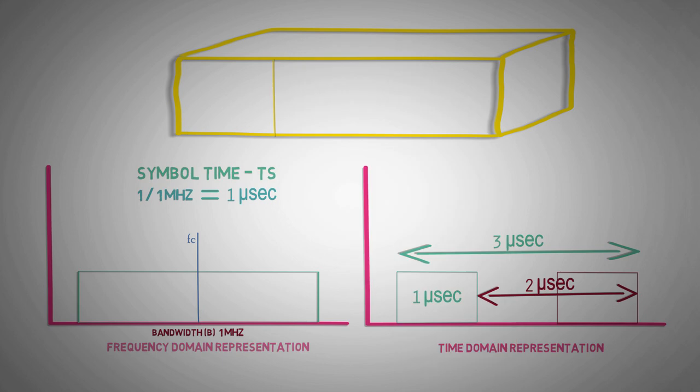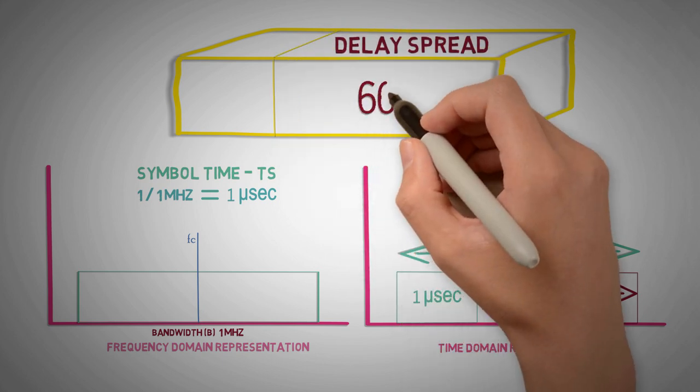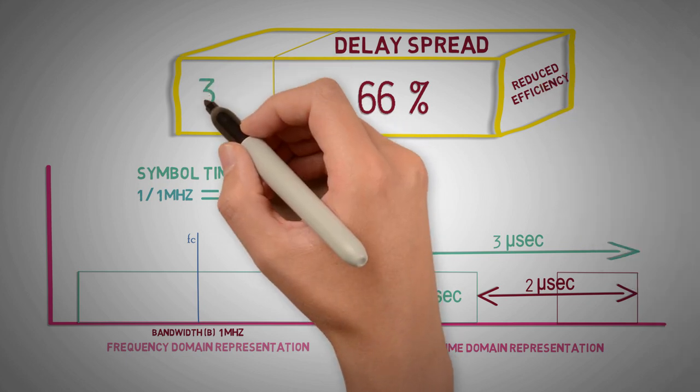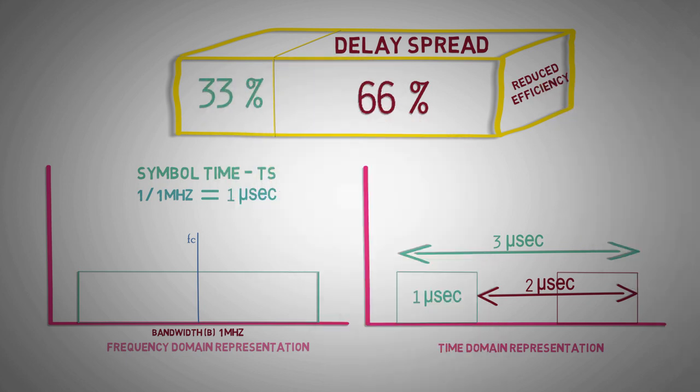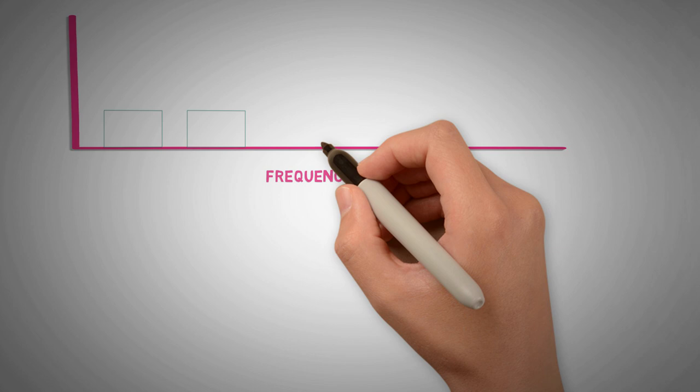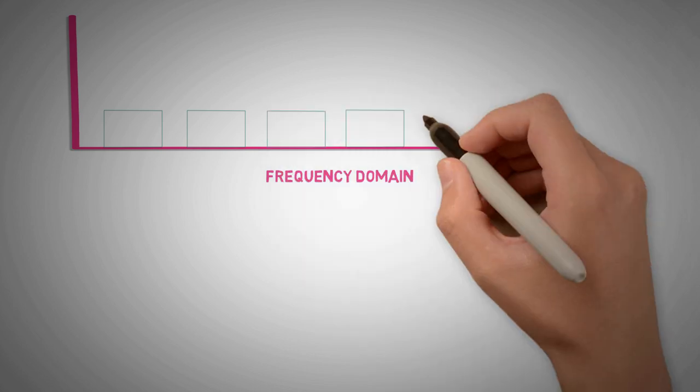Which means delay spread occupies 66% of the combined symbol time, thus reducing the efficiency of the channel by one third. As delay spread is difficult to control, the effect of delay spread can be minimized by using multiple sub-carriers of lesser bandwidth.